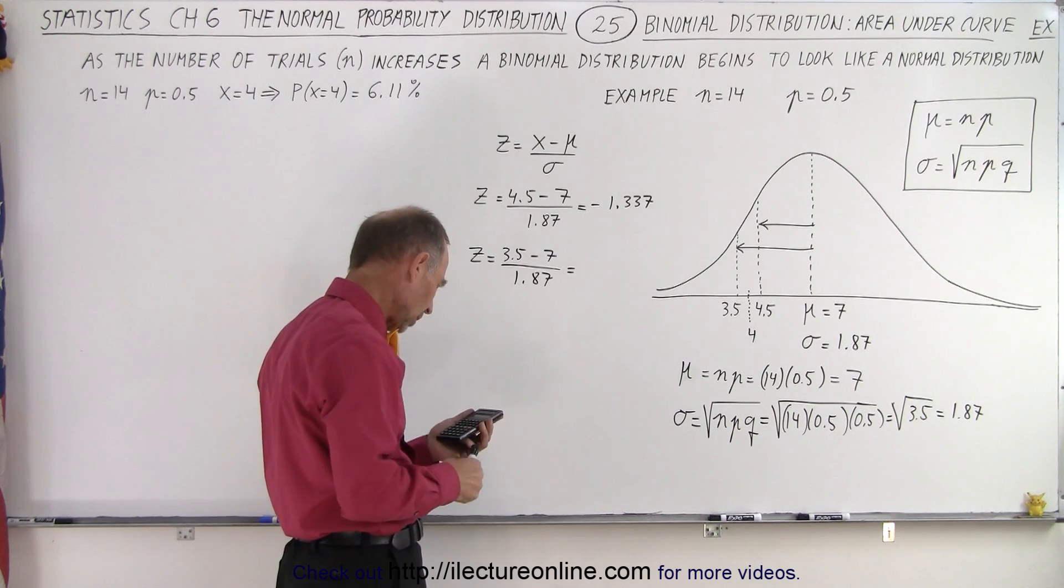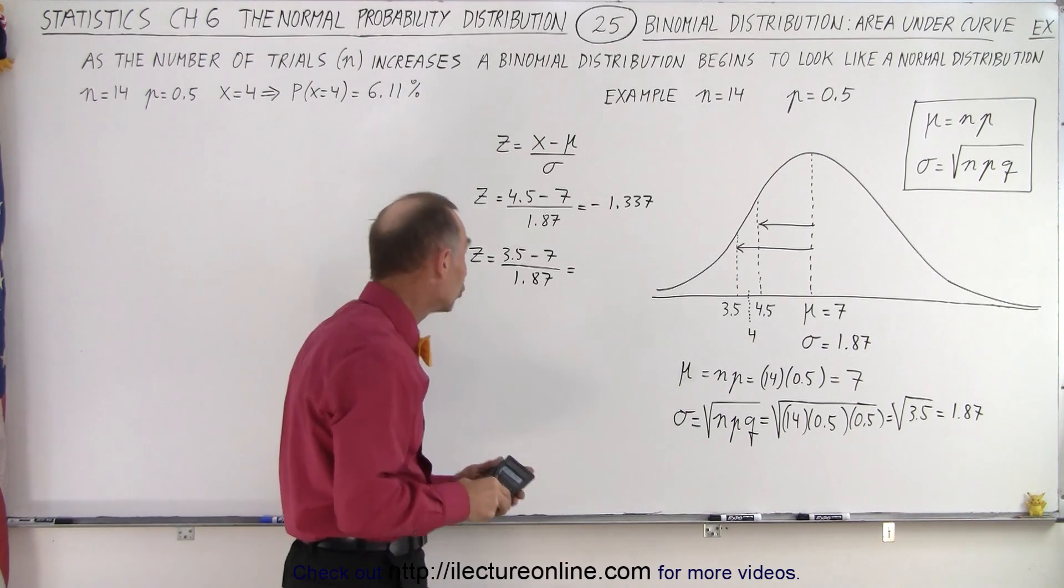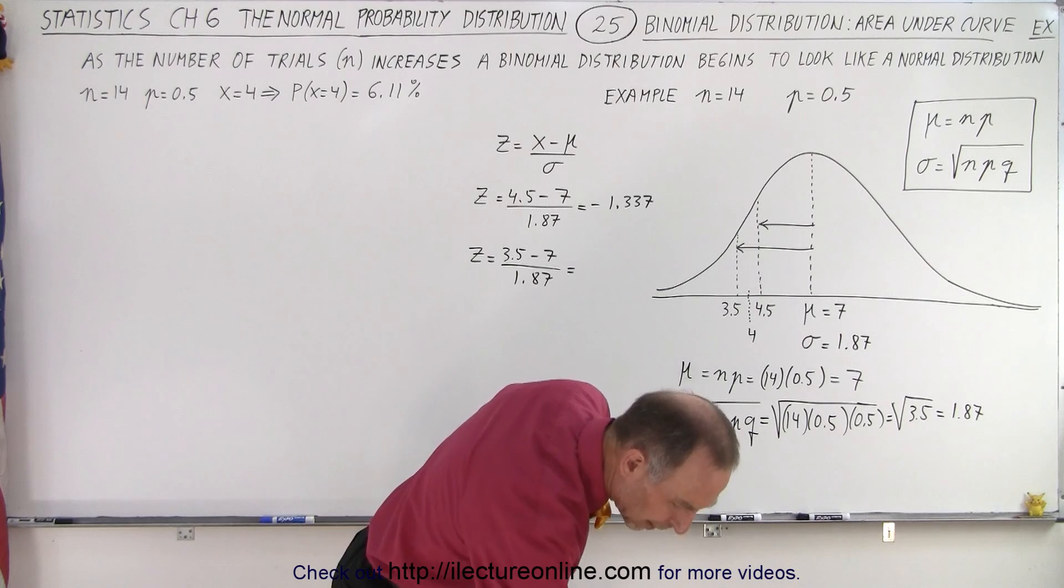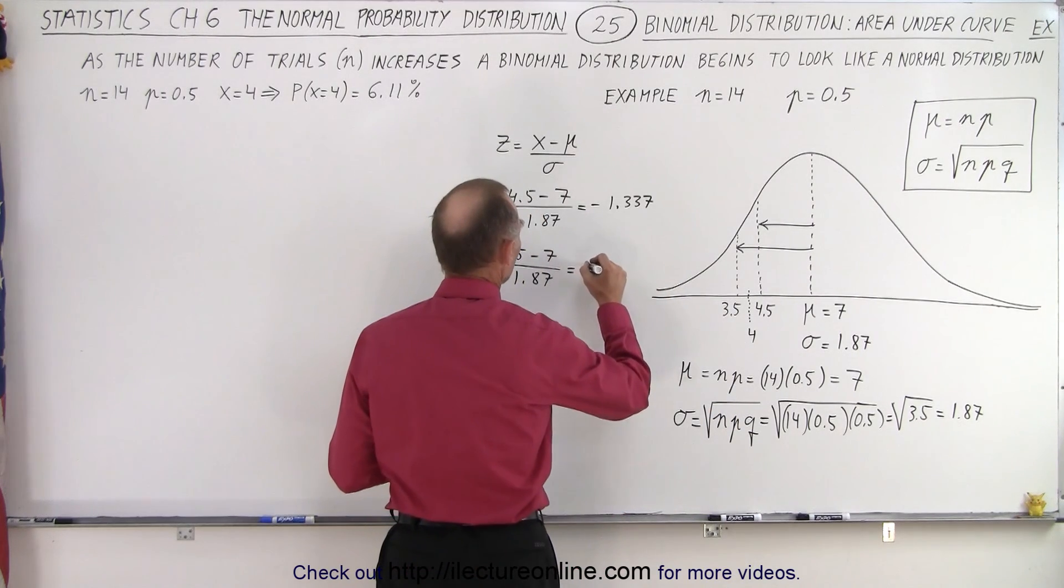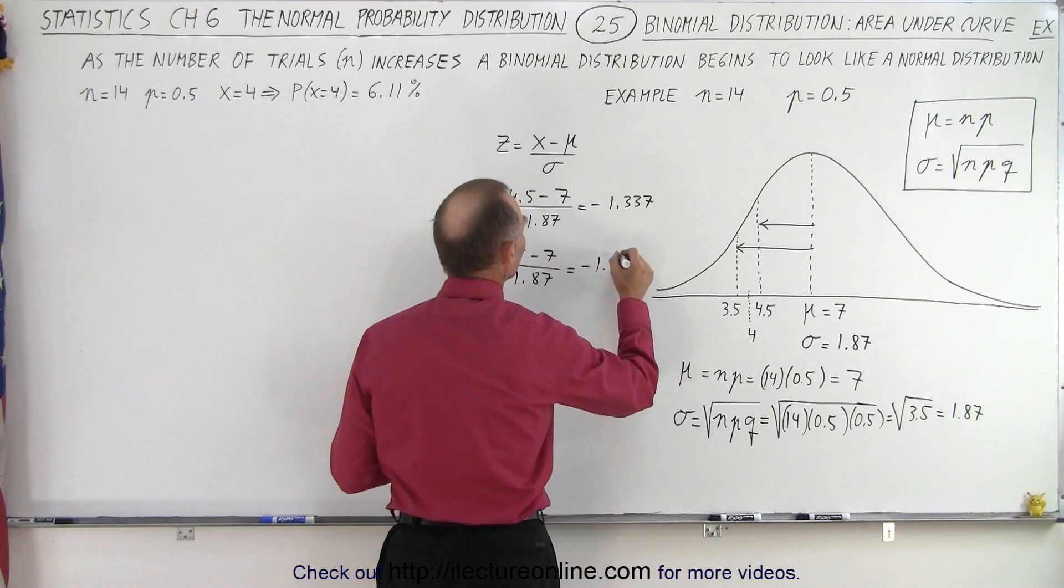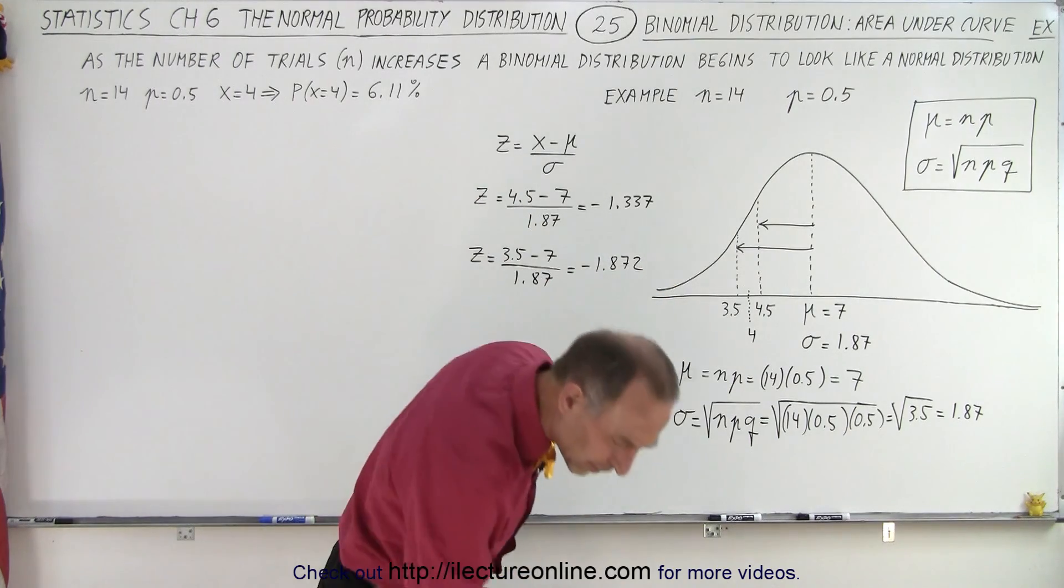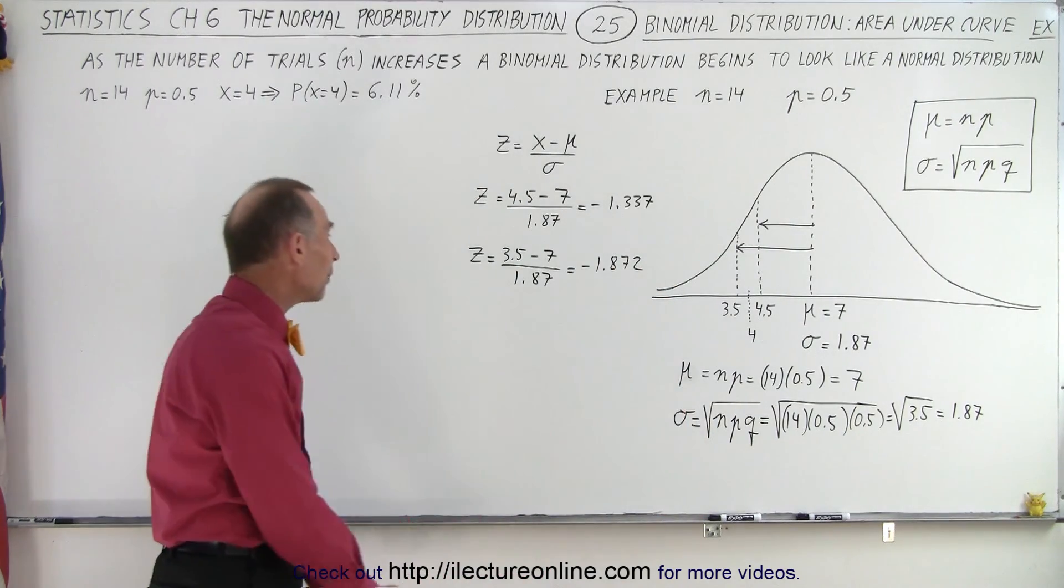And that gives us 1.872. Minus 1.872. All right, so now we have the two z values for the two boundaries.